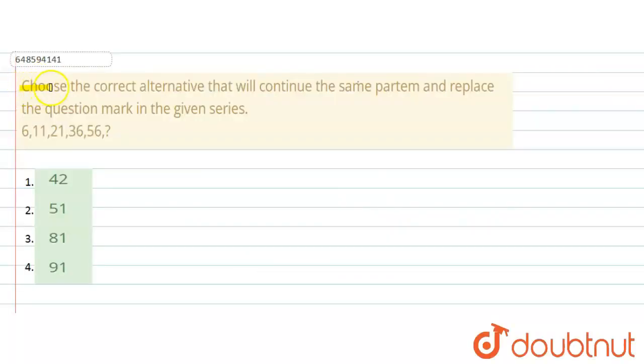The question says choose the correct alternative that will continue the same pattern and replace the question mark in the given series. The series is 6, 11, 21, 36, 56 and question mark. Options are 42, 51, 81 and 91.